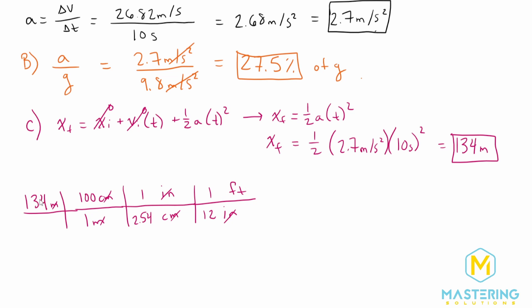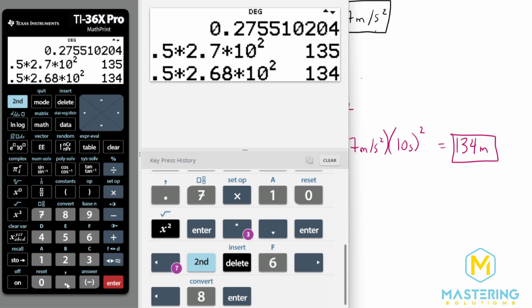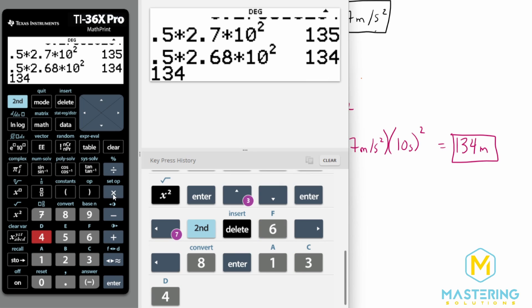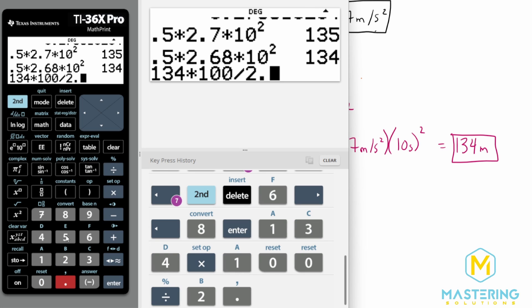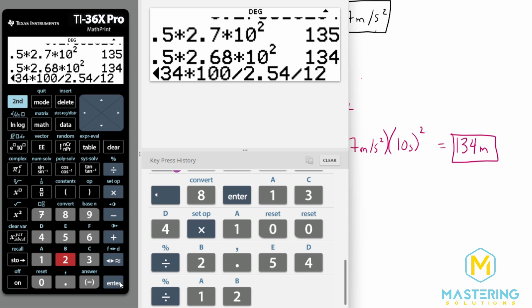So we'll take 134, multiply it by the numbers all the way straight across. If it's on the top, you multiply; if it's on the bottom, you divide. So we have 134 multiplied by 100, and then we'll divide that by 2.54 to put us into centimeters, and then divide that again to go from inches to feet.